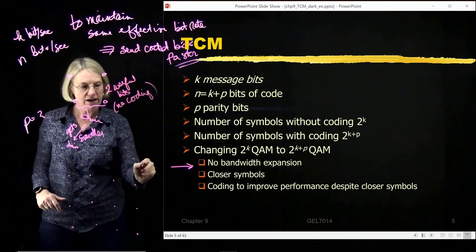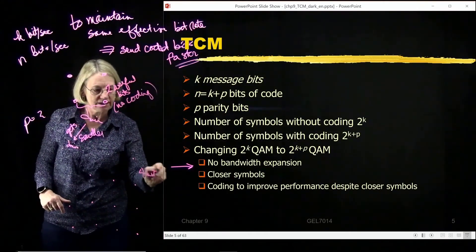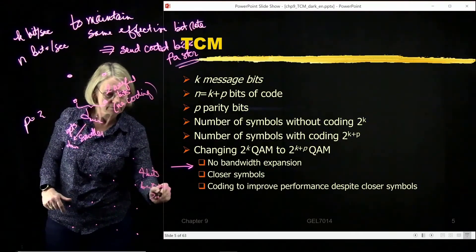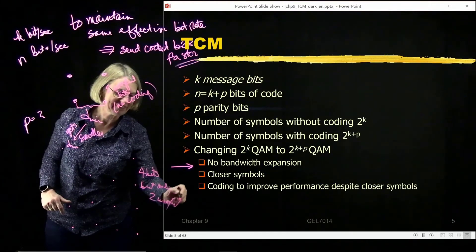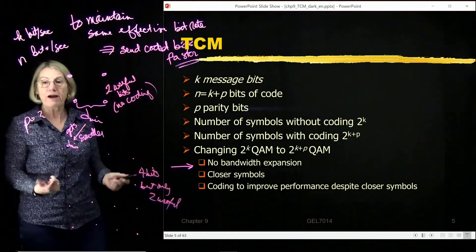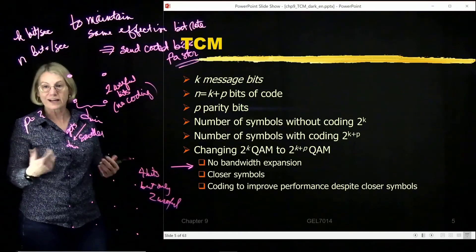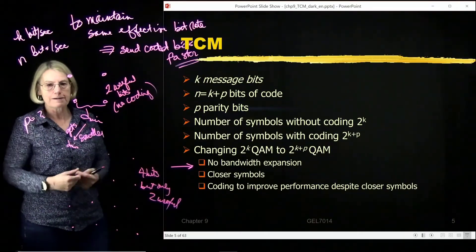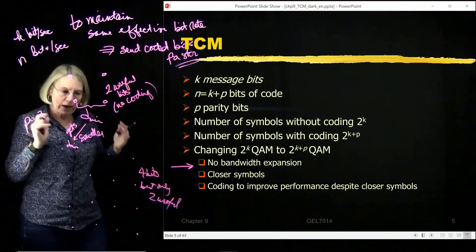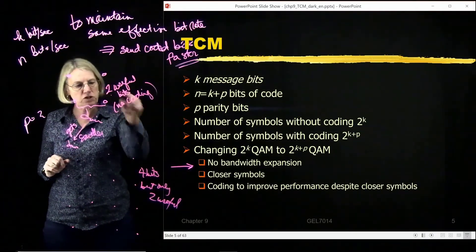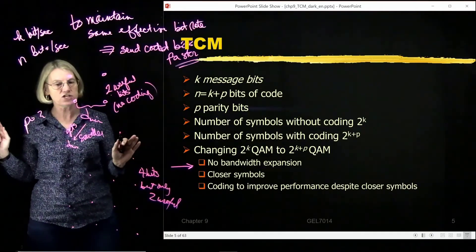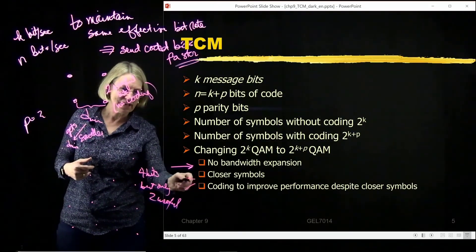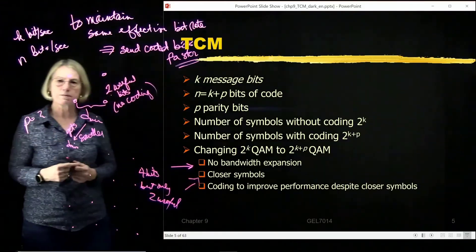No coding. And now down here, I've got 4 bits, but only 2 are useful. Well, useful, directly related to the bit rate. The other 2 are parity bits, and they're useful because they're going to help me correct bits, and give me a better probability of error. But when I do this, when I go from 2 bits to 4 bits, no bandwidth expansion, there's something to pay. And that payment is the fact that I have closer symbols, and they're closer together.